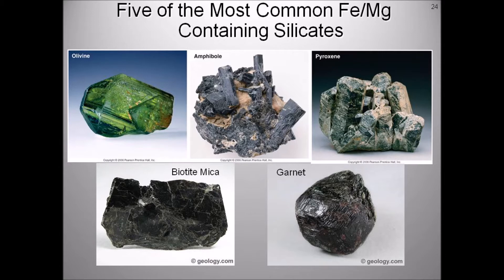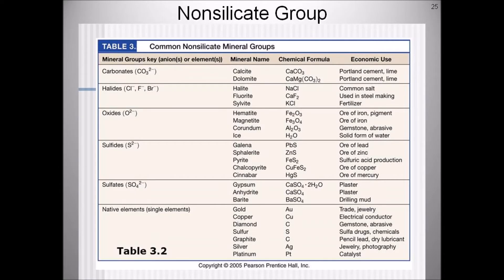The non-silicates are minerals that do not include the silicon-oxygen units characteristic of silicates. They may contain oxygen, but not in combination with silicon. Their structure tends to be more variable and less complex than that of the silicates. The non-silicate mineral groups are carbonates, halides, oxides, sulfides, sulfates, and native elements. Many of the non-silicates are economically important, especially those that include valuable metals.